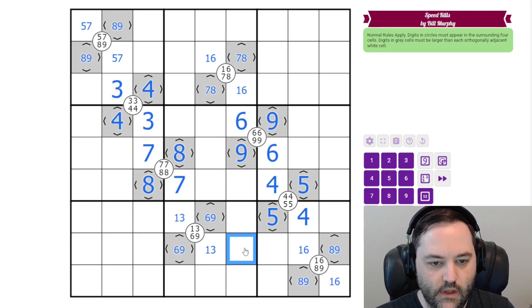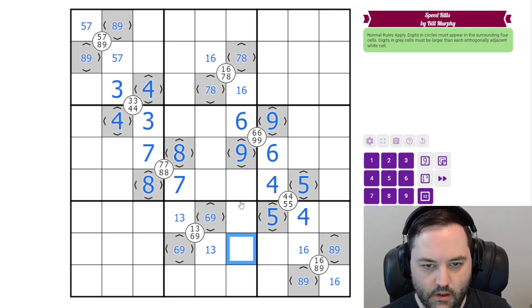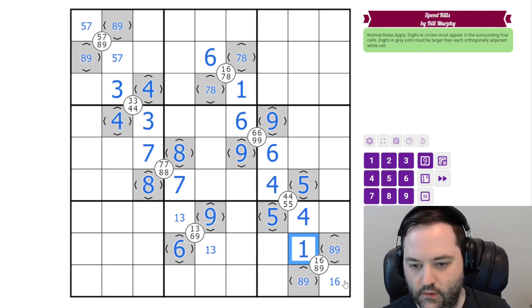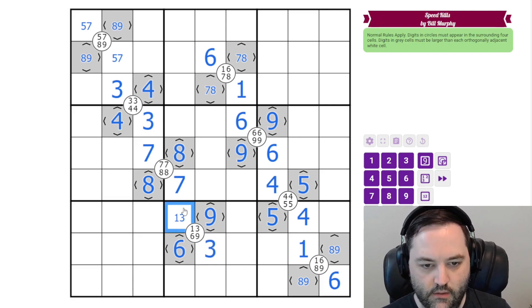All right, now we need to look for where we can clean this up. And 6 here gives us 1 and 6. The 6 there gives us 9 and 6. And that 6 gives us 1 and 6 here. 3 and 1 here.